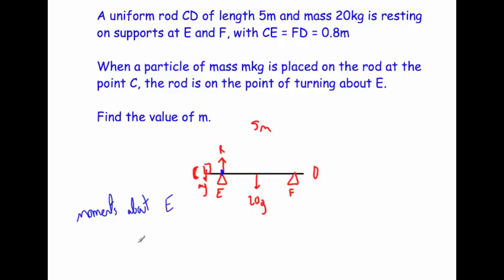Clockwise moments equal anti-clockwise moments. At E, the clockwise moment is this one. The rod is 5 metres, so from the end to the centre is 2.5 metres. From the end to the support is 0.8, so the distance from E to the centre is 1.7 metres. The clockwise moment is 1.7 × 20g.